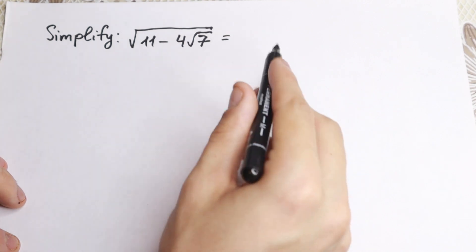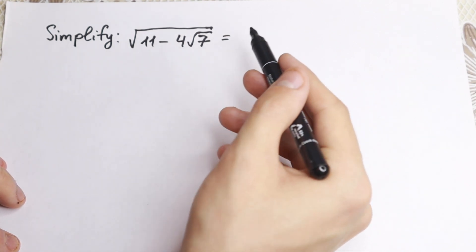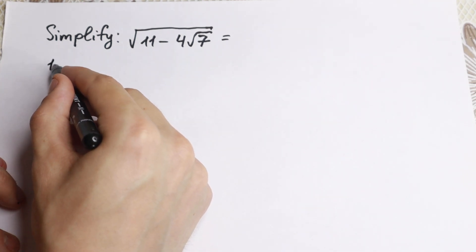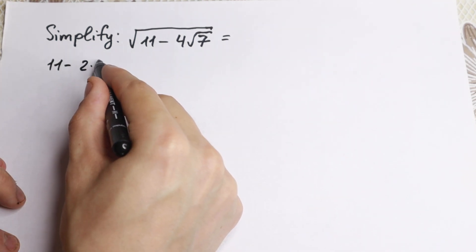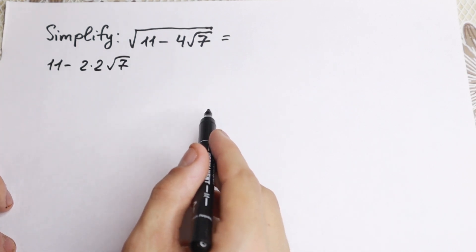But I want to show you a really good approach for how we can simplify this. First of all, let's write this 4 as 2 times 2. Let's do this. We'll have 11 minus 2 times 2 times square root of 7. We just write it as 2 times 2.